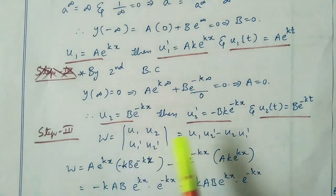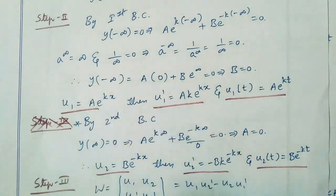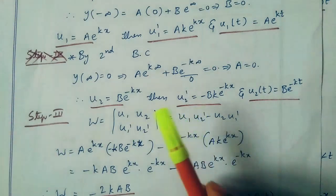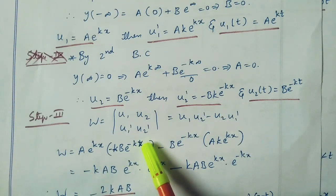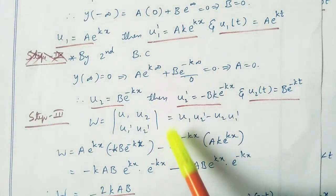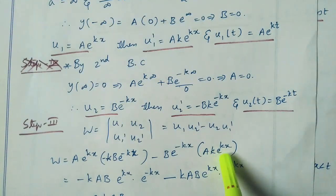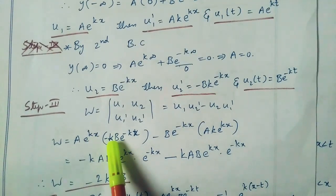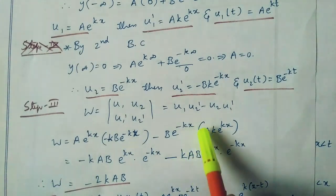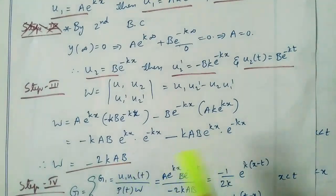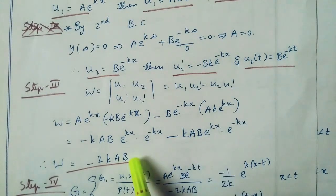Step 3: W equal to u1·u2 dash minus u2·u1 dash. Here u1 is a·e^(kx) and u2 dash is minus bk·e^(-kx), minus u2 is b·e^(-kx) into u1 dash is ak·e^(kx). Since e^(kx)·e^(-kx) equals 1, W equals minus kab minus kab, giving W equal to minus 2kab.